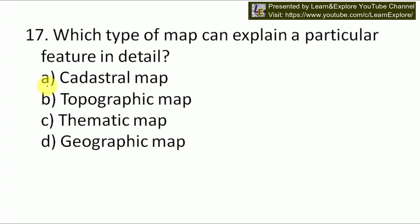Next question: which type of map can explain a particular feature in detail? Options are cadastral map, topographic map, thematic map, and geographic map. Our answer will be C — thematic map, because a thematic map is involved in the generation of a world-class feature which can determine the parameters and features in the area of interest.